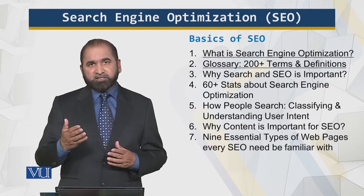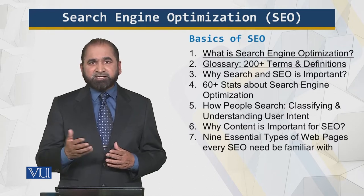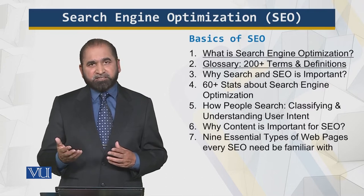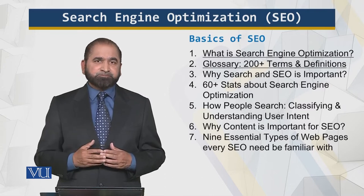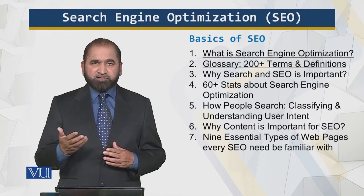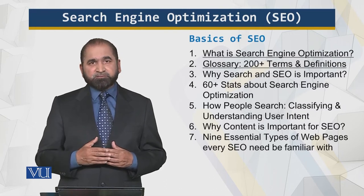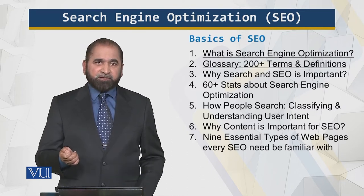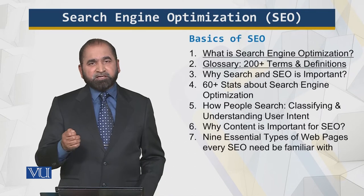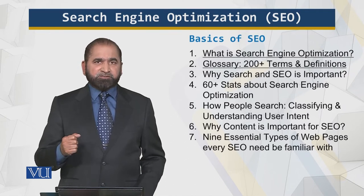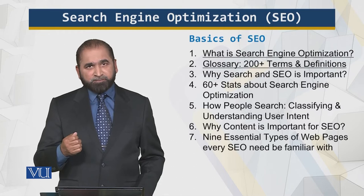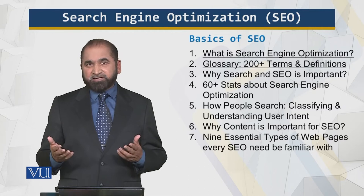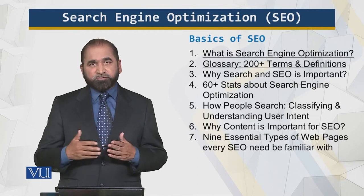Right now I will briefly mention certain glossary items — of course it is not possible to cover 200 items even in detail. One aspect of search engine optimization in the glossary is that when people come to your website and leave without clicking on any other page, that is not used directly for ranking purposes by Google. But it does give a measure of the quality of your content, which of course contributes toward your ranking.